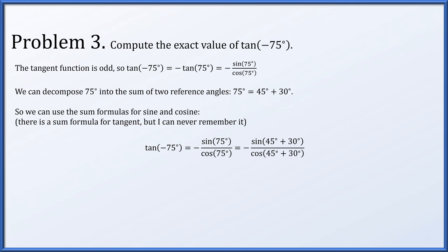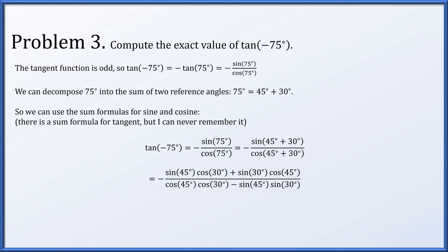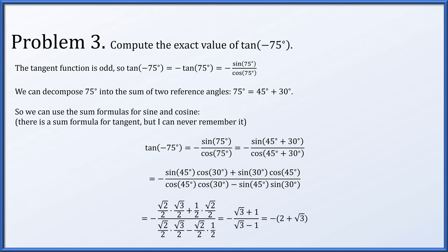We decompose both 75-degree terms as 45 plus 30 to use the sum formulas. In the numerator, we have negative times [sine 45° cos 30° plus sine 30° cos 45°] using the sine sum formula. In the denominator, we use the cosine sum formula: cosine 45° cos 30° minus sine 45° sine 30°. All these are known values, and plugging them in and simplifying, this reduces to negative (2 plus √3).